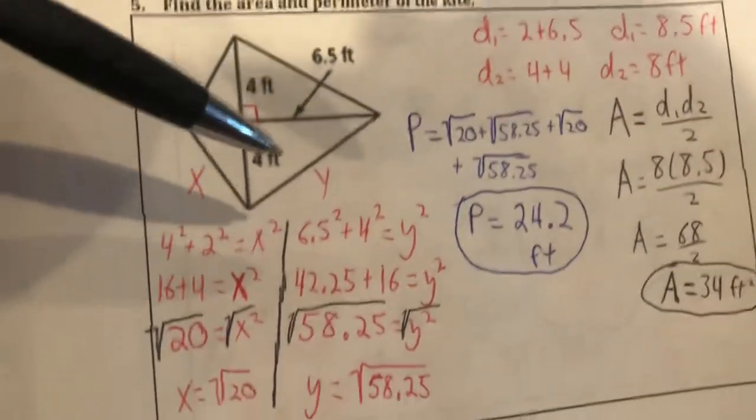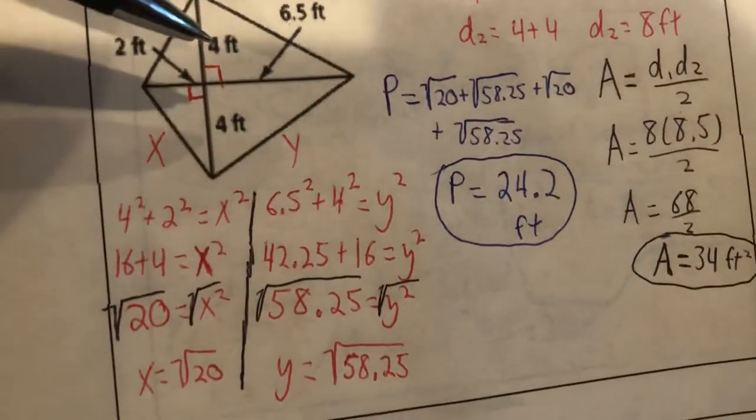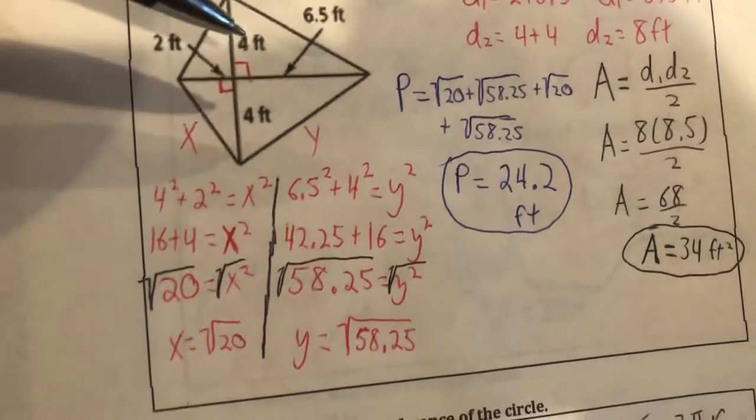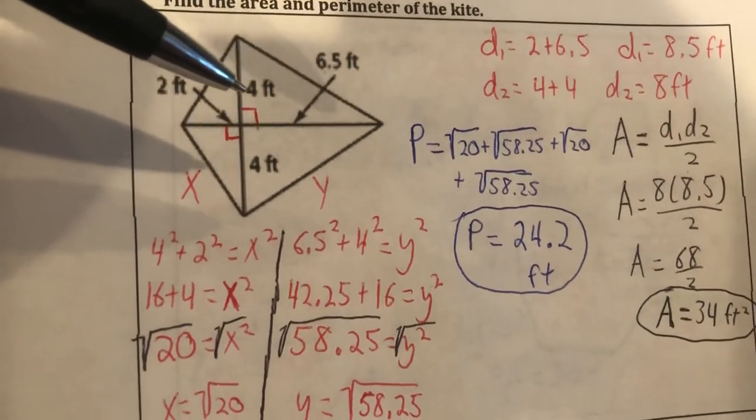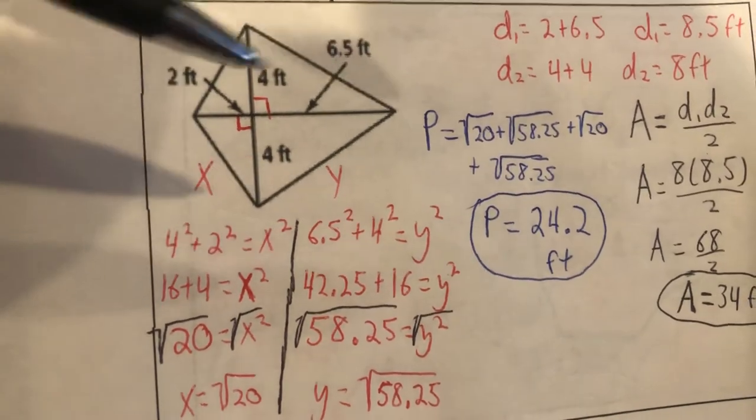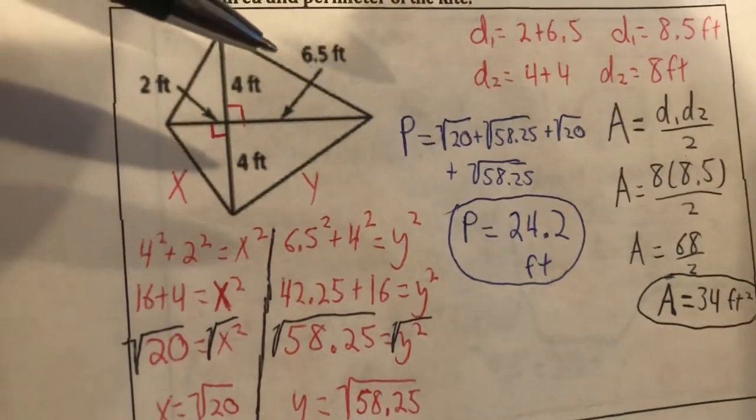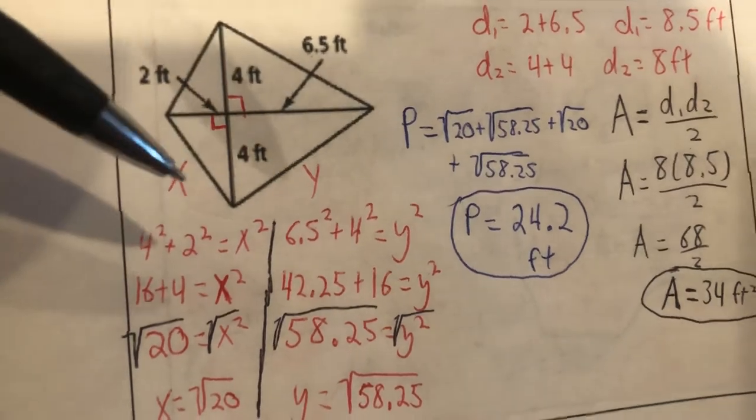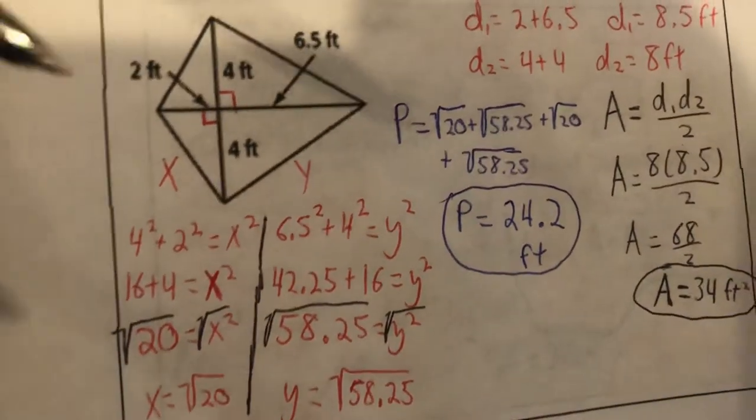Looking at the two triangles on the right, let's say we're using the top right one—it doesn't matter, they're both the same. Let's go ahead and use the Pythagorean theorem there. So we have 6.5 squared plus 4 squared equals y squared. And again I just called it y because I had just used x on the last one. You can make up any variable you want.